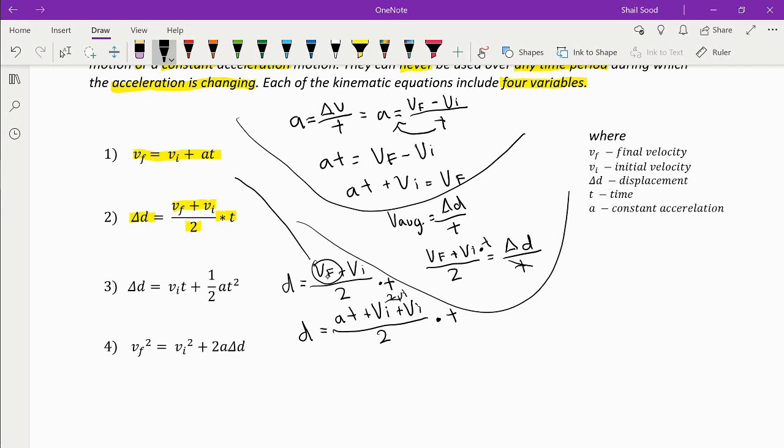we get VI times T plus one half AT squared, which is the third kinematic formula.